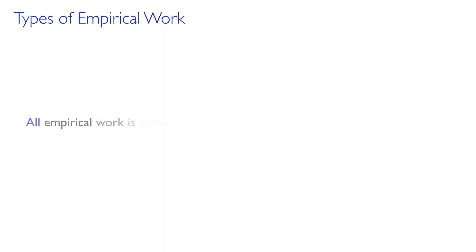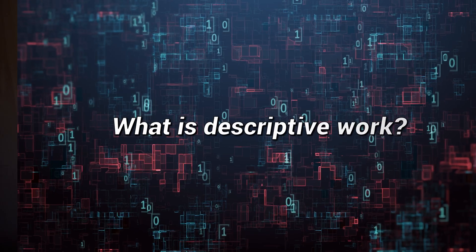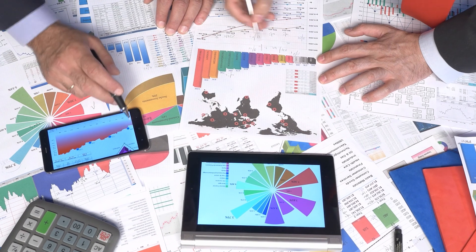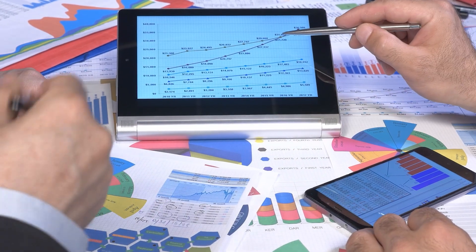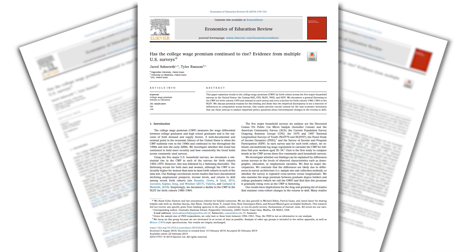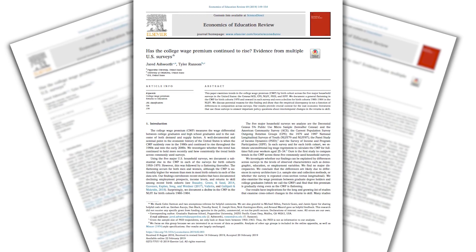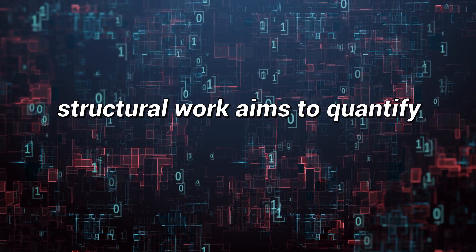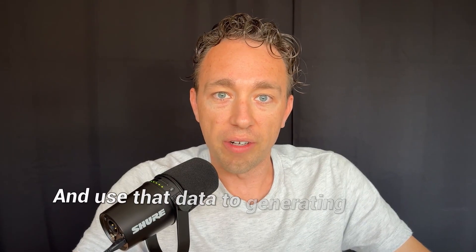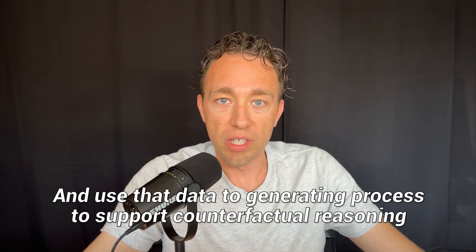Renowned economist Phil Hale from Yale University puts it perfectly. He says all empirical work is either descriptive or structural — there's no middle ground, there's no reduced form. Descriptive work primarily looks at things observed in the data and relationships between observables. For example, we might be interested in how the wage differential between college graduates and high school graduates has trended over time. Structural work, on the other hand, aims to quantify a data generating process and use that to support counterfactual reasoning — this encompasses most of what we'd call modern econometrics, whereas descriptive analysis is mainly applied statistics.